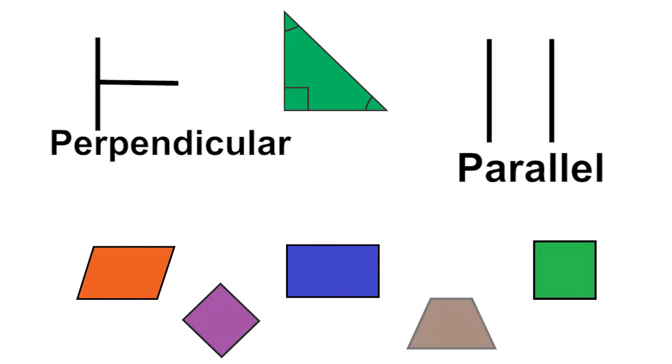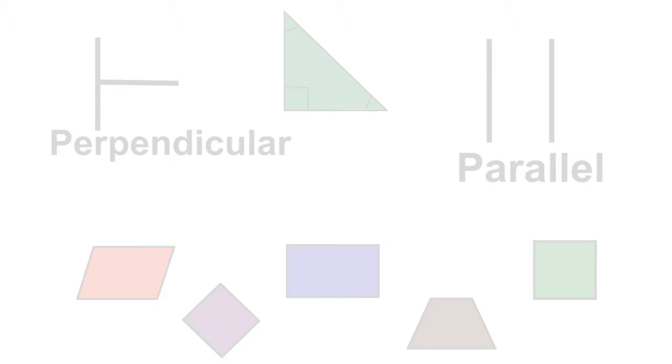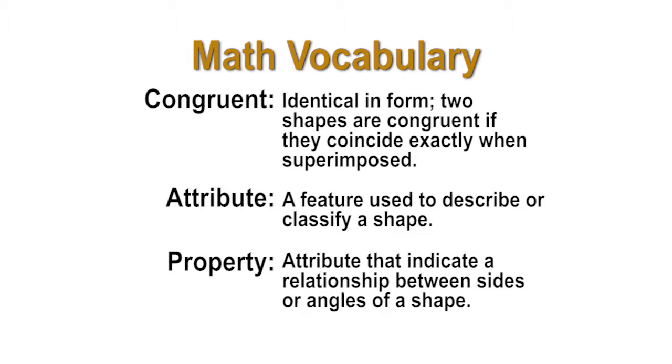In previous lessons, students learned how to describe shapes based on the shape's properties. Vocabulary words used were congruent, attribute, and properties.